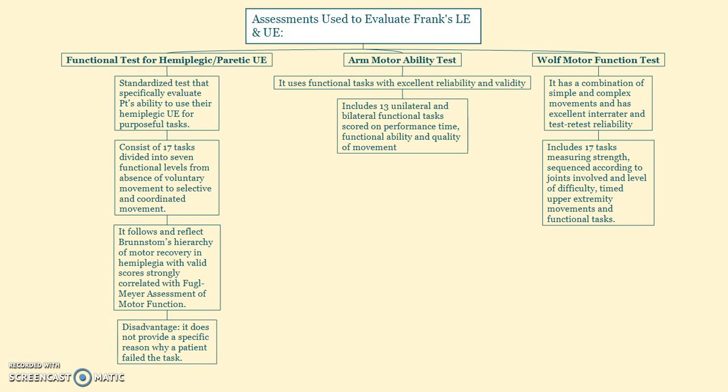One disadvantage is it does not provide a specific reason why a patient failed the test. Another assessment is the Arm Motor Ability Test. It uses functional tasks with excellent reliability and validity. It includes 13 unilateral and bilateral functional tasks scored on performance time, functional ability, and quality of movement.